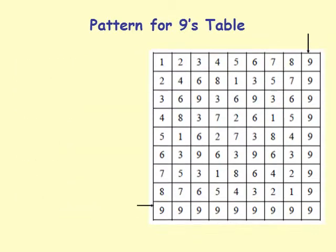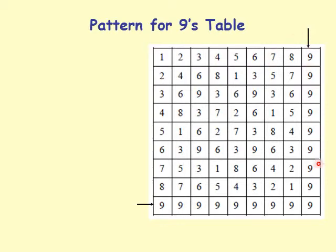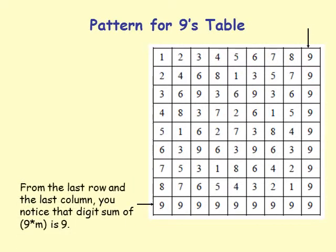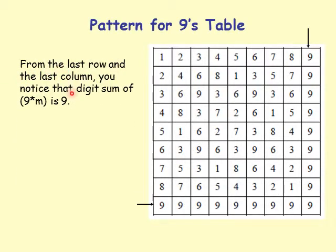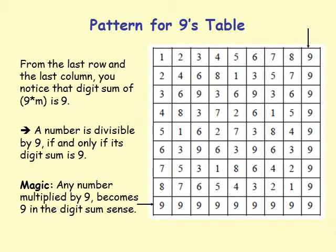Looking at the pattern for the 9's table — either the last column or last row in the Vedic square. From the last row and column, you notice that the digit sum of 9 times any number m is always 9. So 1 times 9 is 9 (digit sum 9); 2 times 9 is 18 (digit sum 9); 3 times 9 is 27 (digit sum 9); these numbers in that row and column were all multiples of 9 and divisible by 9. A number is divisible by 9 if and only if its digit sum is 9.